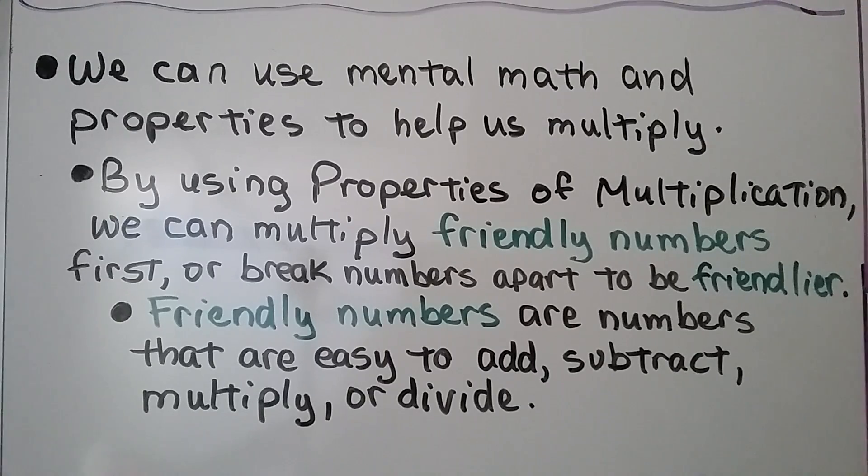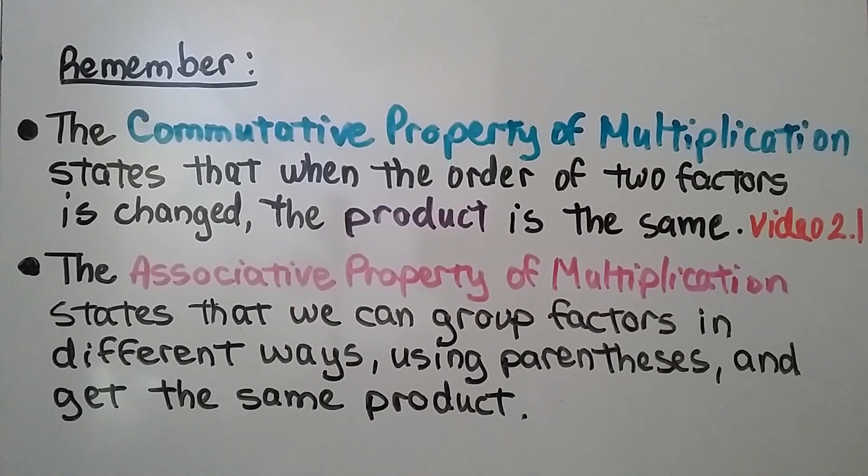Remember, the commutative property of multiplication states that when the order of two factors is changed, the product is the same. We first learned about that in video 2.1. The associative property of multiplication states that we can group factors in different ways using parentheses and get the same product.